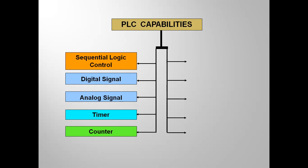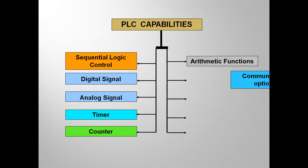PLC is doing many tasks single-handedly — you don't need to add any separate module. In PLC software, we are also having mathematical functions like addition, subtraction, multiplication. PLC also supports different communication options like RS-232, RS-485, RJ-45, Modbus, Profibus, and Wi-Fi communication where you can connect a router. Different types of communication options are available with the PLC.